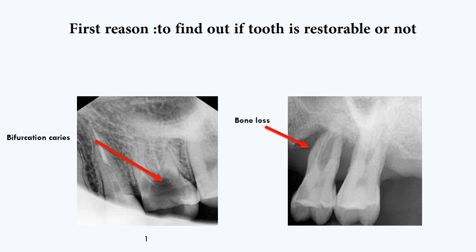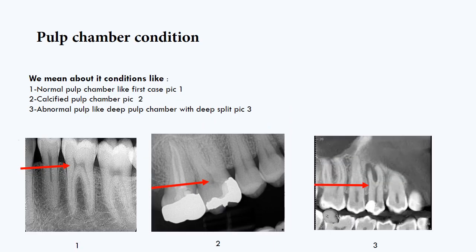X-ray also helps us to identify pulp chamber condition. We mean conditions like a normal pulp chamber, as in picture number one; a calcified pulp chamber, as in picture number two; and an abnormal pulp like a deep pulp chamber with a deep split, as in picture number three.